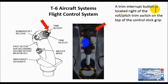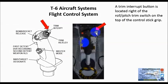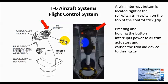The trim interrupt button is located right of the roll pitch trim switch on the top of the control grip. So we have the roll pitch trim switch, and then we have a button — that is the trim interrupt switch. Pressing and holding the button interrupts power to all trim actuators and causes the trim aid device to disengage. All we have to do is press that button and it will disengage.